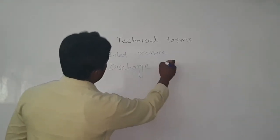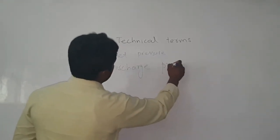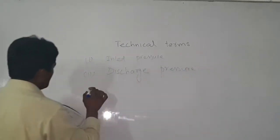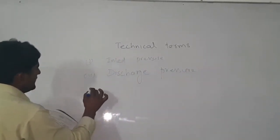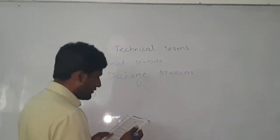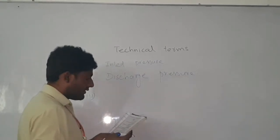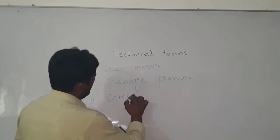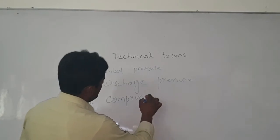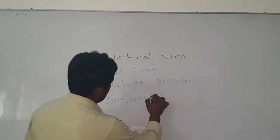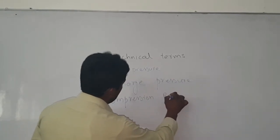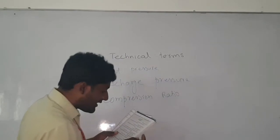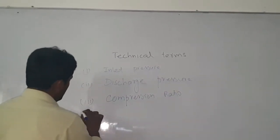I am writing in big letters - I don't know if it is visible to you on the board. Please let me know in the comments if this video is suitable for you or if I should reshoot it. The third technical term is compression ratio - this is very important. After that, written here is compressor capacity.